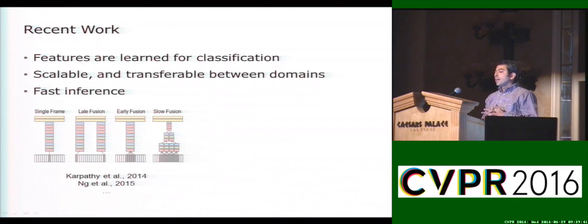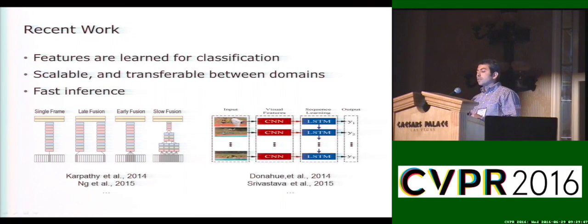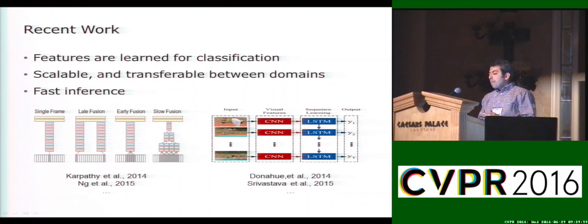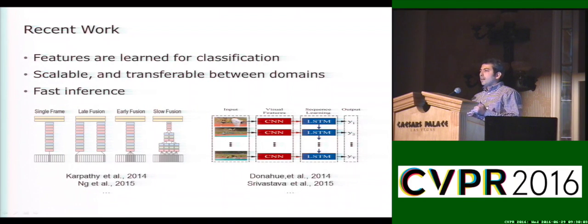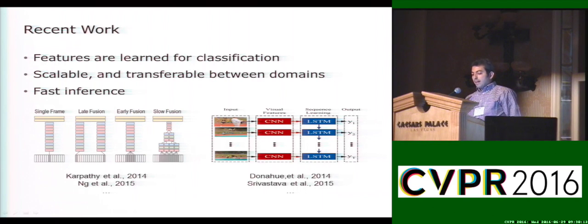Recent approaches use deep convolutional neural networks with temporal pooling or a recurrent neural network for action classification. The advantages of these approaches are that they are able to learn features in an end-to-end way, these features are transferable to other domains, they are easily scalable, and due to the feed-forward architecture, they are usually fast in inference.